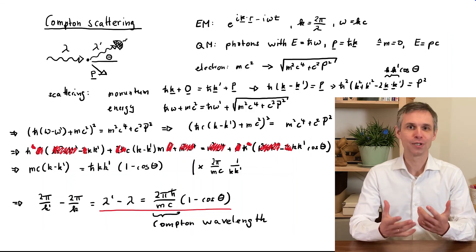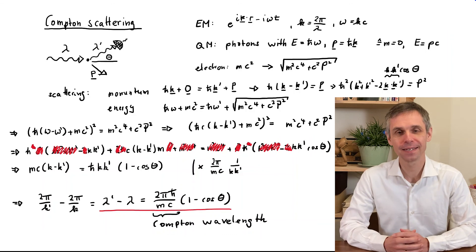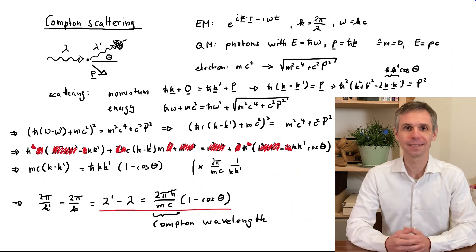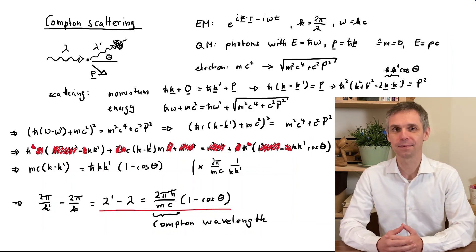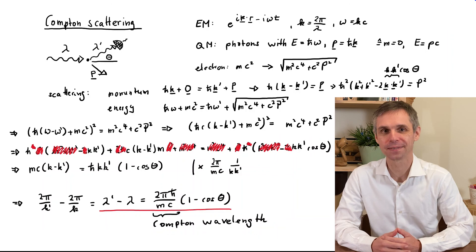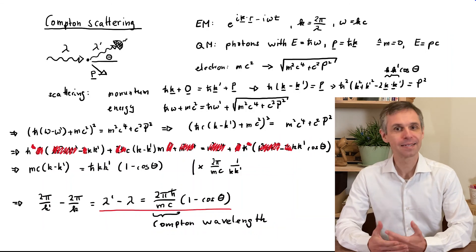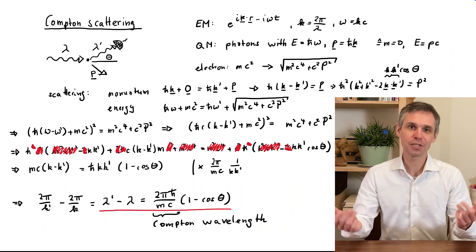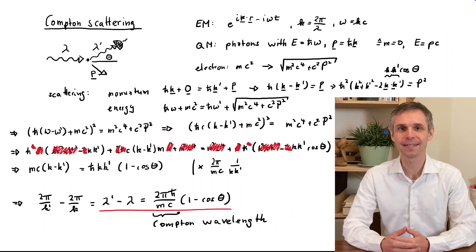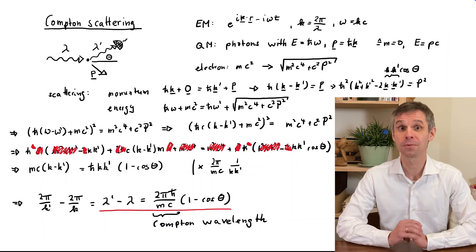Note that this expression does not depend on the intensity of the light, which is a key difference to the classical description of such a scattering process. This highlights the situation in which a classical wave such as light displays particle-like properties.